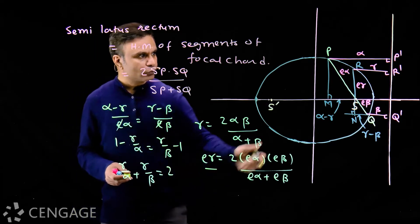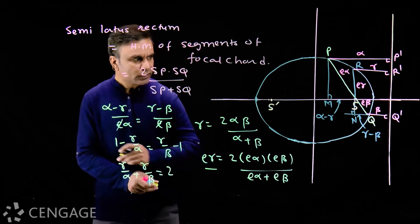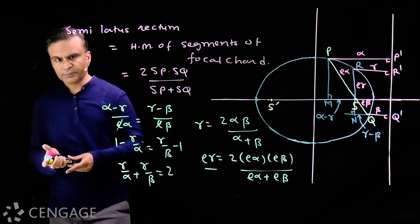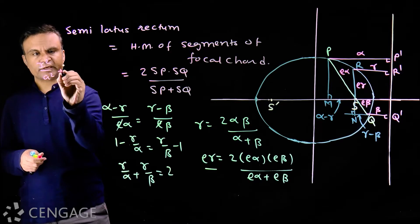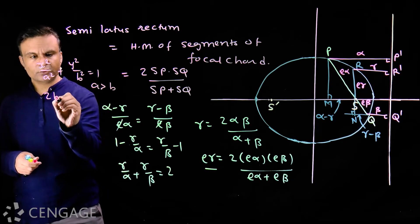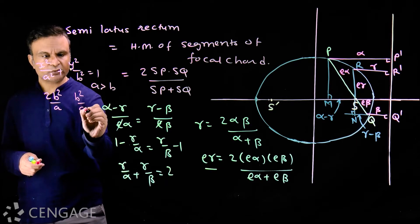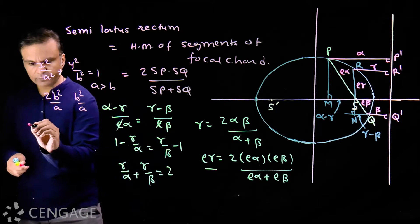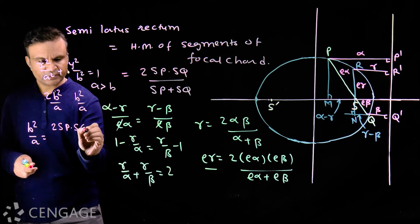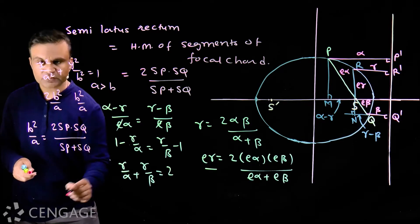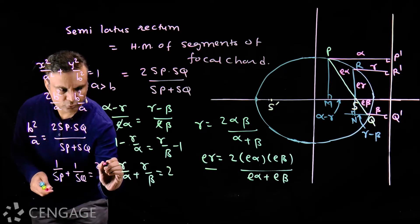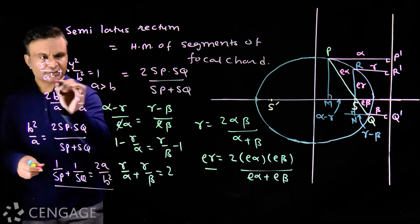This holds for any focal chord. For the standard equation of ellipse x²/a² + y²/b² = 1, where a > b, the length of the latus rectum is 2b²/a, so the semi latus rectum is b²/a. Using the formula: b²/a equals two times SP times SQ divided by (SP plus SQ). This simplifies to: 1/SP plus 1/SQ equals 2a/b². This result holds for this standard equation; if a < b, then a and b are interchanged.